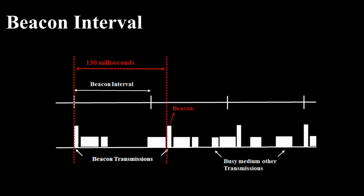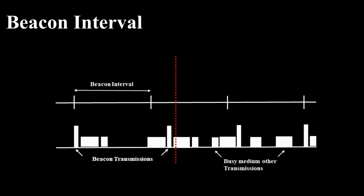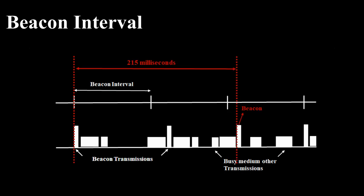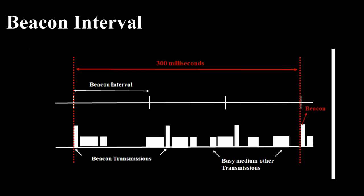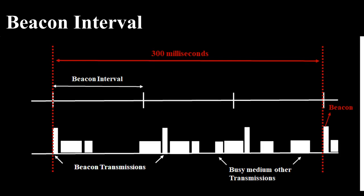The TBTT is called a Target Transmission Time because it does not always occur at exactly 102.4 ms. If you set it to 100 TUs (the default), and the wireless medium is available at the TBTT, the beacon will be transmitted then. However, if the medium is busy at the TBTT, the AP will contend for access to the medium as usual. If the medium is busy a second TBTT in a row, the beacon is given high priority after the current transmission.